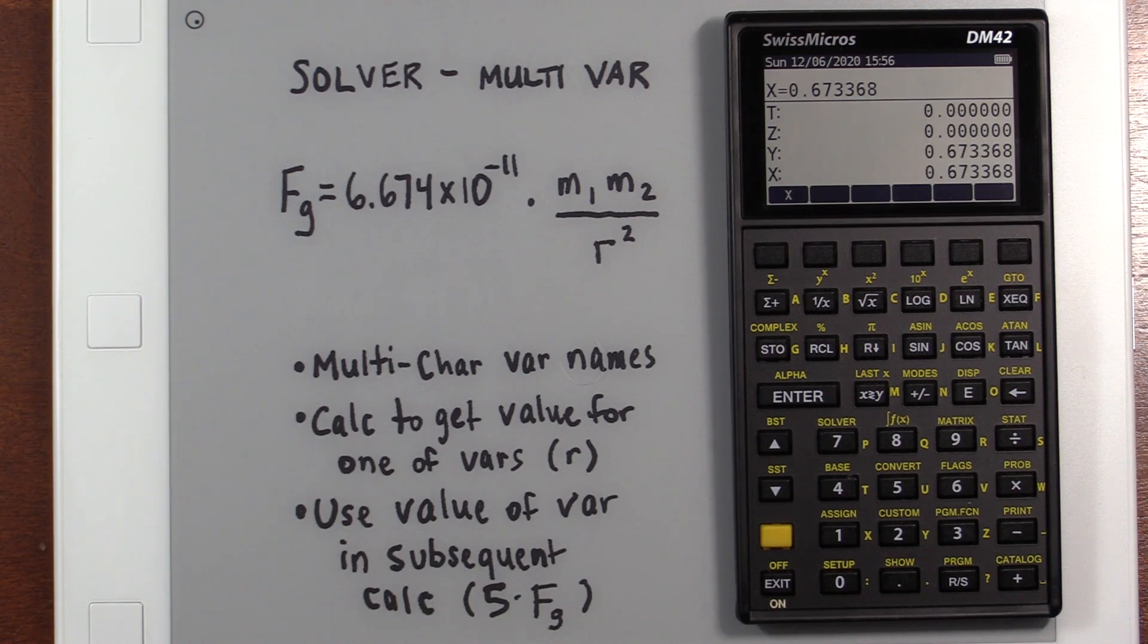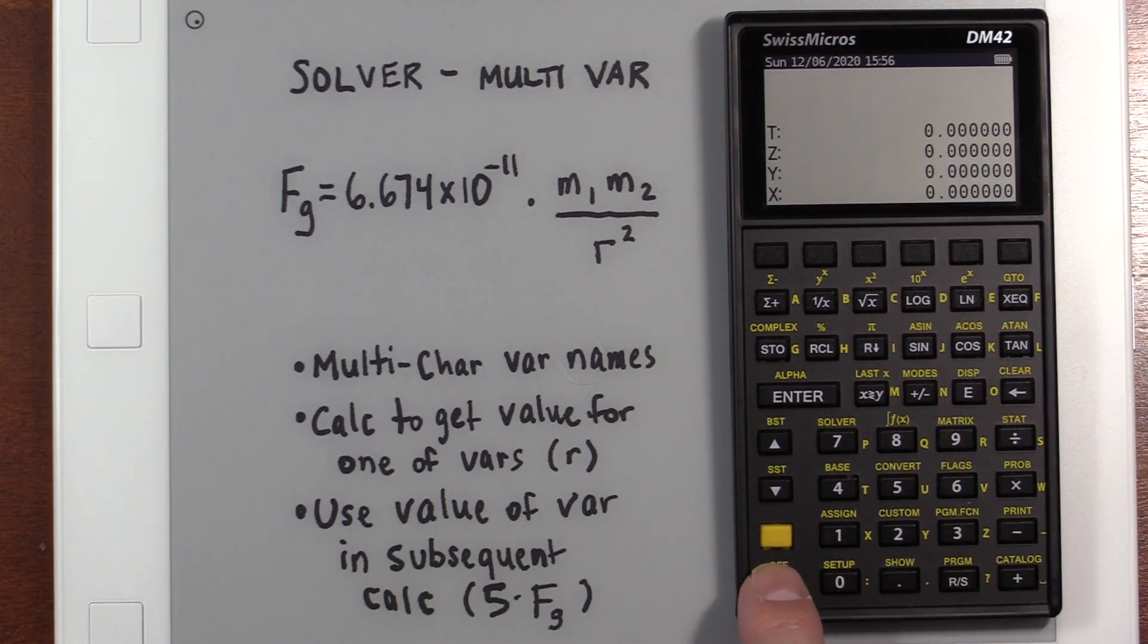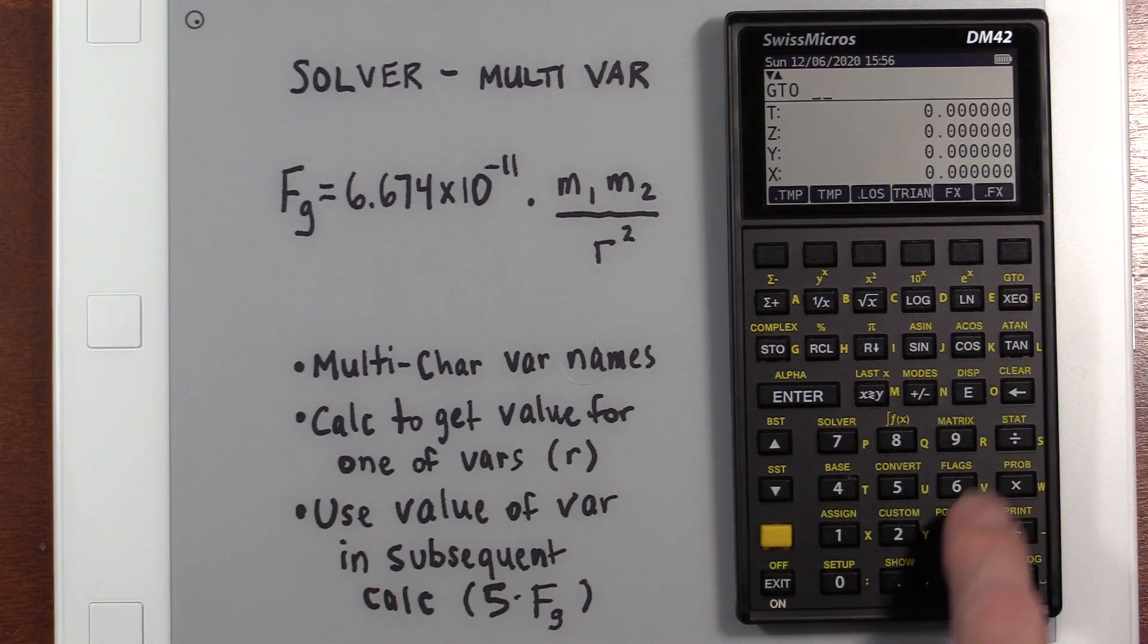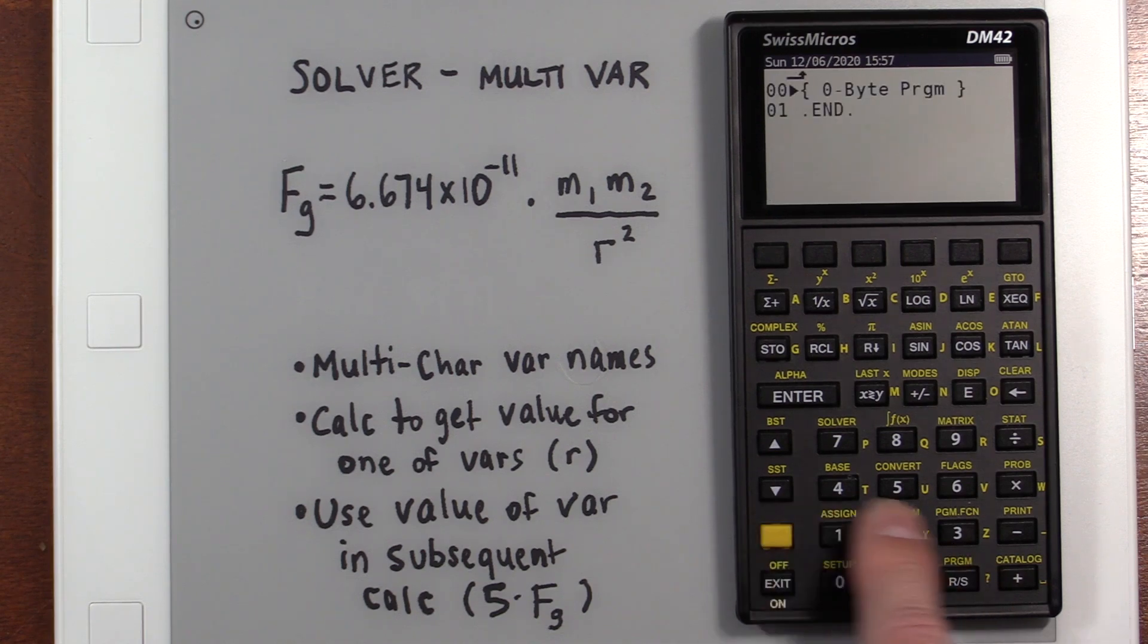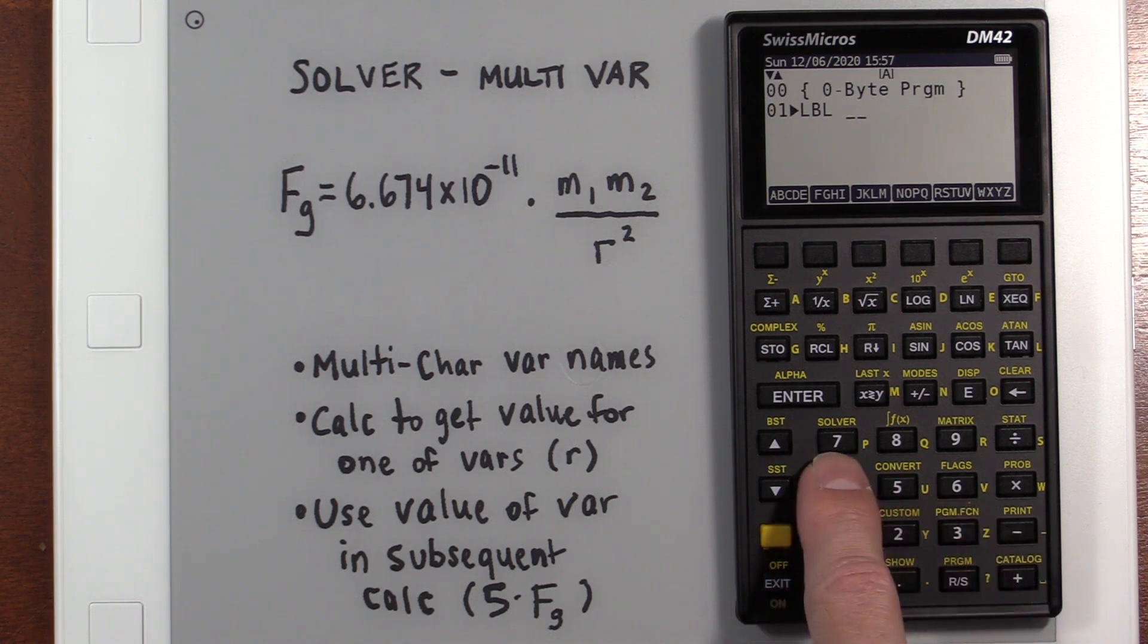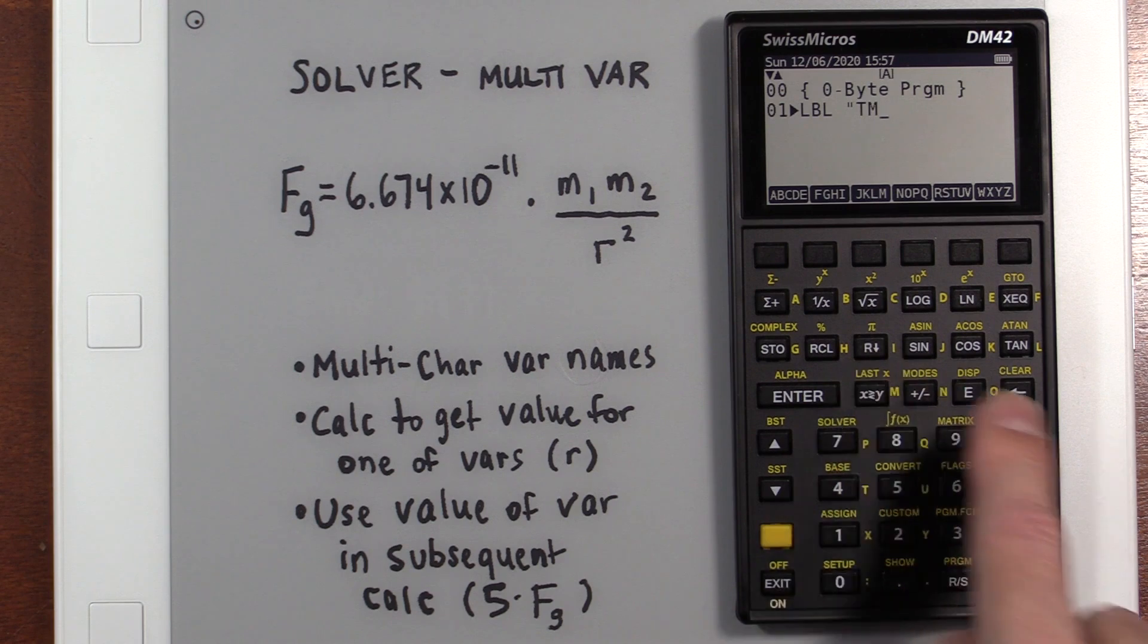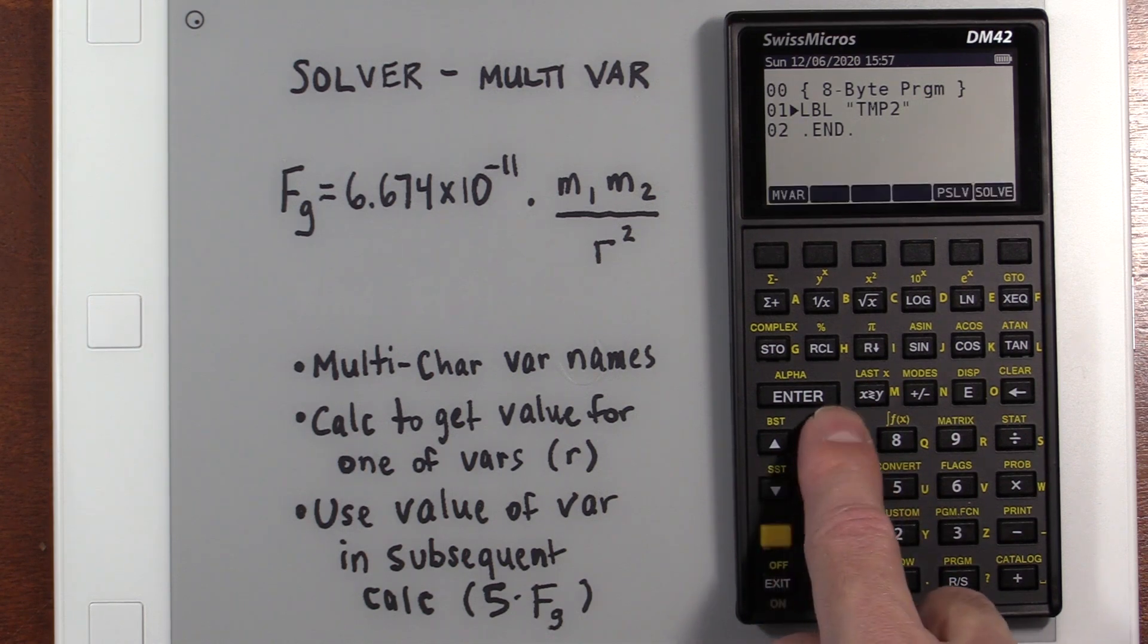What if we wanted to use the solver for a multivariable problem? And let's clear this stack here. And we'll make a new program. We'll go to, we'll hit period twice, go into the program, and label it, let's just call this temp2. I'm being very creative here, can't you tell? So TMP, and then 2.